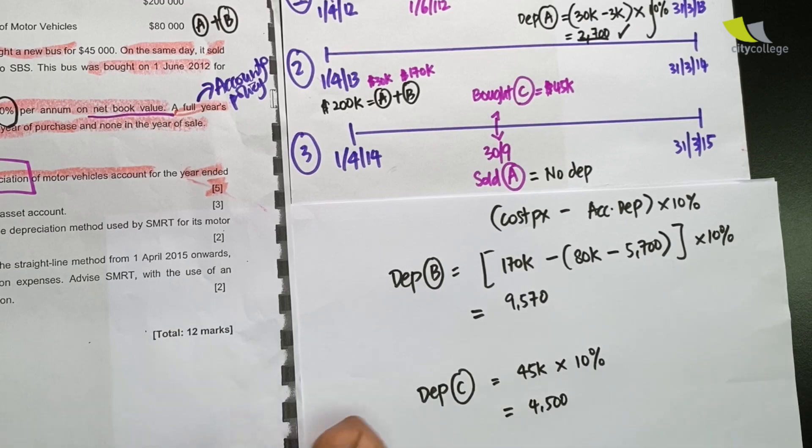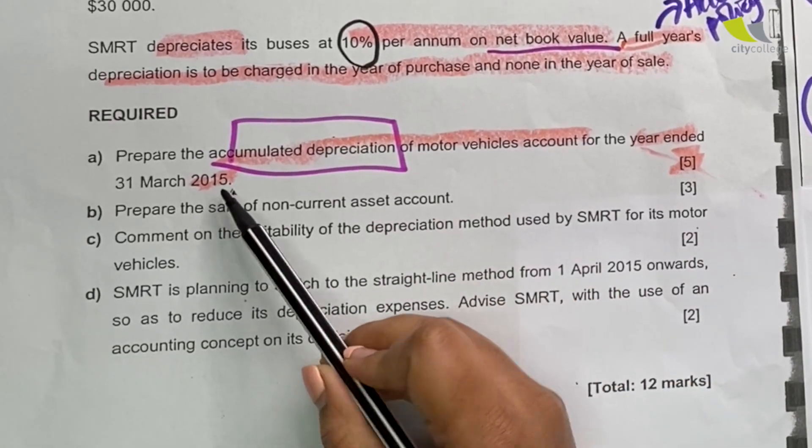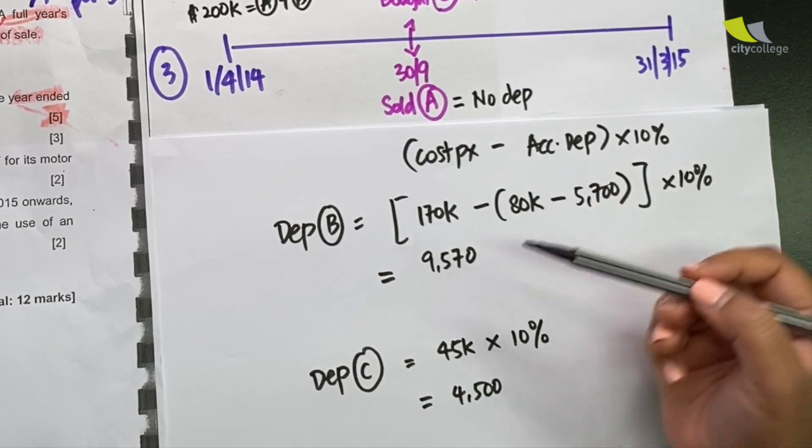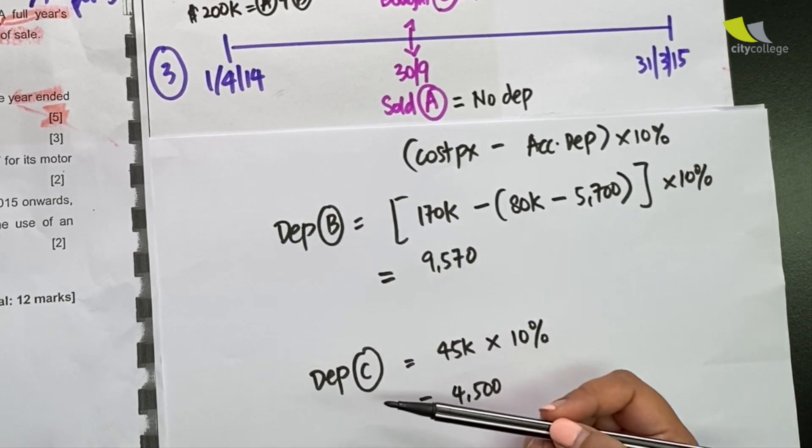So the question says what is the accumulated depreciation for the last year? It will be $0 for A and $9,570 plus $4,500 for B and C.